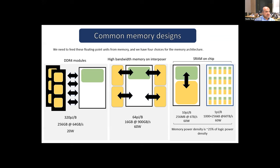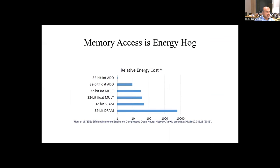Work by Han at Stanford with Bill Dally shows that for a 32-bit integer addition — if that's the energy cost — if you're trying to do a 32-bit SRAM access, you will get an order of magnitude or more in energy cost. And if it's from the DRAM, it's really going to be a very high energy computation. So as much as we like to improve multiplication and addition, we have to worry about the access time and the energy hog of the memory.